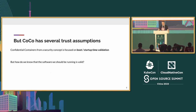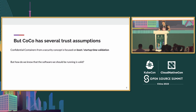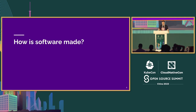Confidential containers does still have a lot of trust assumptions that remain — it's a very hard problem. The concept is focused on boot and startup time validation of what it's running. A real question in a system like this is: how do you know that the thing you're running is actually the thing you're supposed to be running? That is the focus of the second part of this talk.